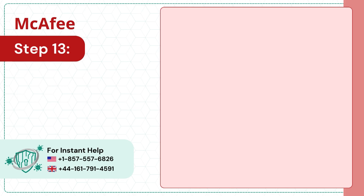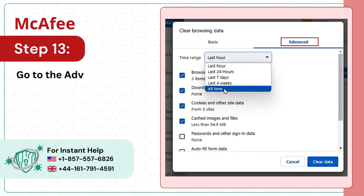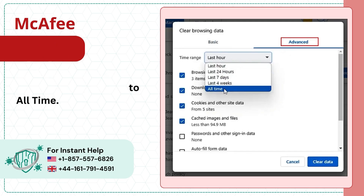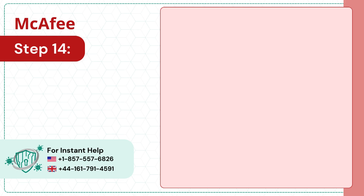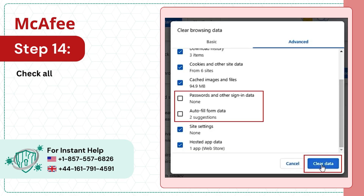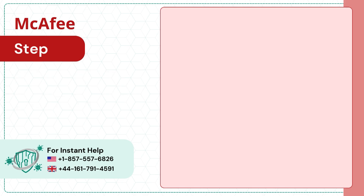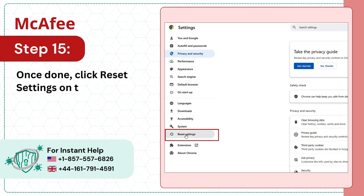Step 13: Go to the Advanced tab and set the Time Range to All Time. Step 14: Check all the options except for Passwords and Other Sign-In Data and Auto-Fill Form Data, and click Clear Data. Step 15: Once done, click Reset Settings on the left side of the window panel.